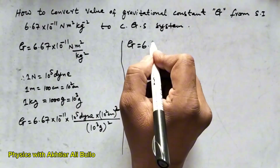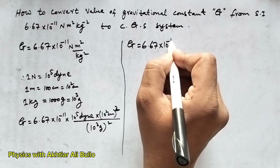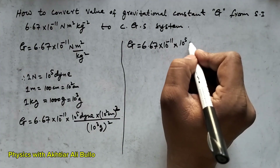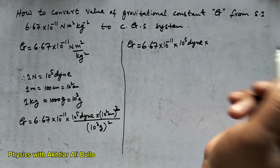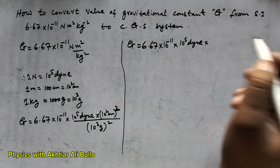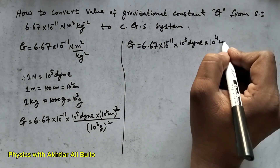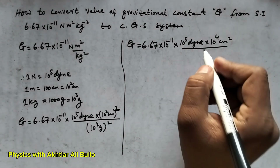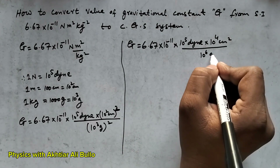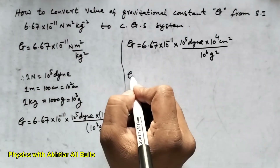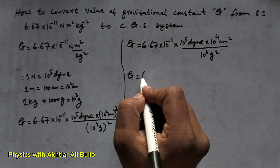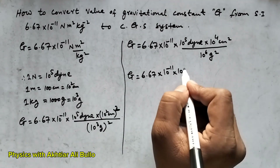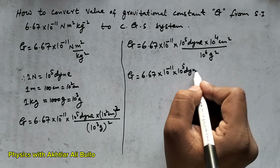So the value of the gravitational constant will be 6.67 × 10⁻¹¹ × 10⁵ dyne, and the square of 10² is 10⁴ centimeter squared, divided by the square of 10³ which is 10⁶ gram squared.